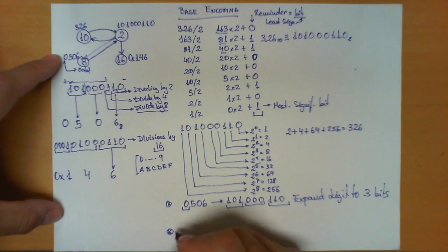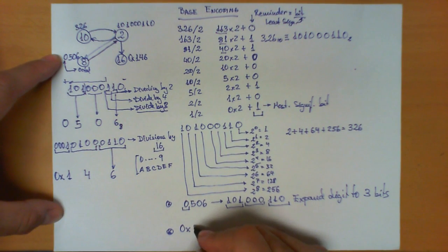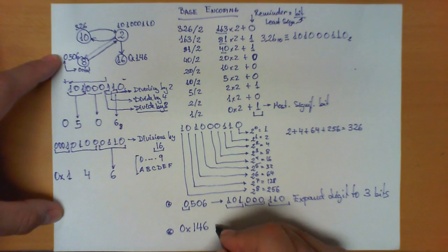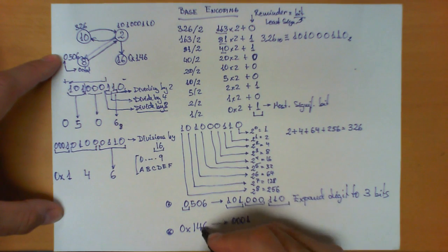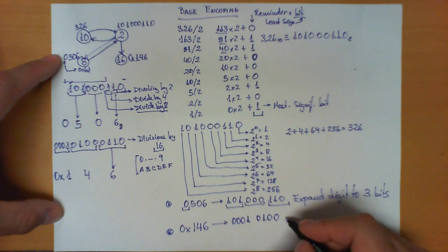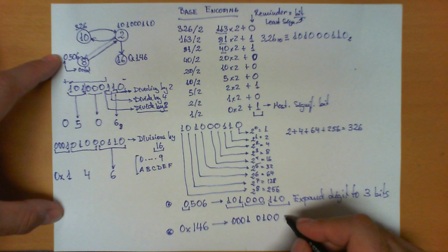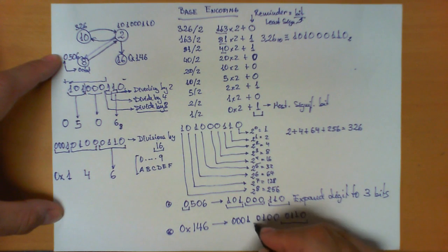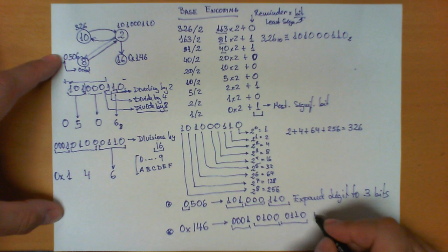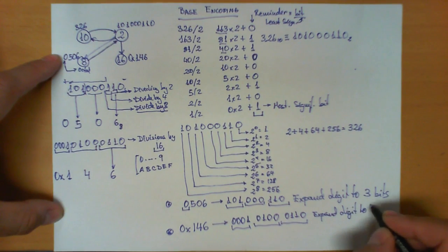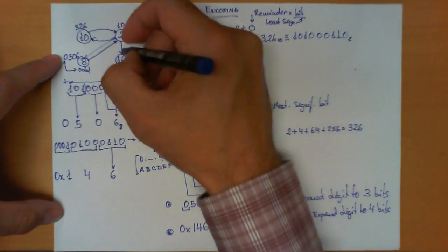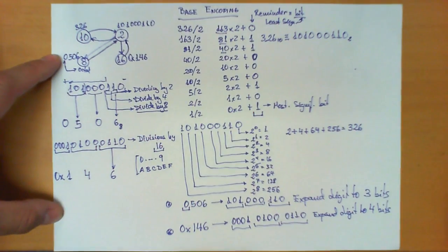For hexadecimal, the trick is exactly the same. If we are given 0x146, we expand each digit to 4 bits. So the digit 1 is 0001, the digit 4 is 0100, and the digit 6 is 0110. That is how we translate hexadecimal to binary: expand each digit to 4 bits.